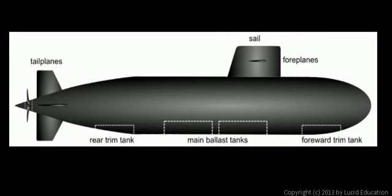And when they want the sub to surface, they need to increase the buoyancy of the sub, so they pump the water out of the ballast tanks and replace it with air, and then the average density of the submarine becomes less than that of water, and the submarine comes to the surface.